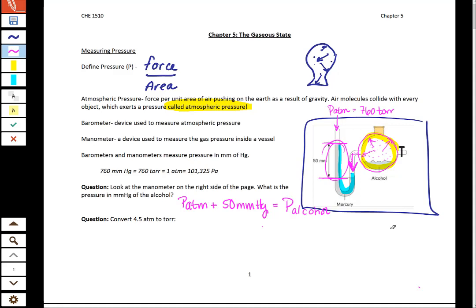If we assume the pressure of the atmosphere is 760, then we add 50 to that, and we get 810 torr.